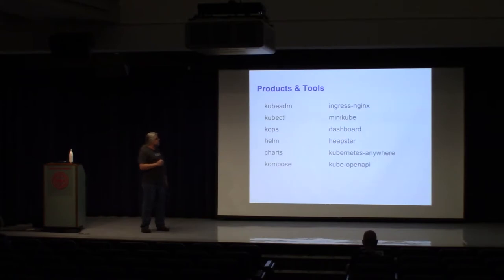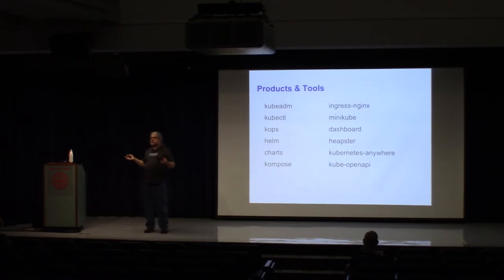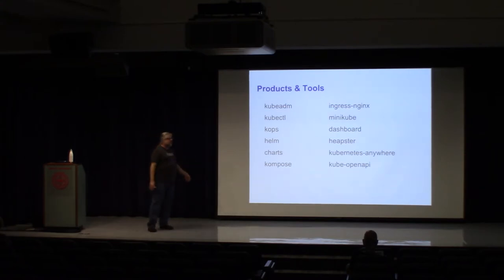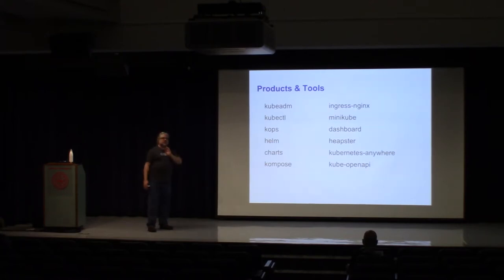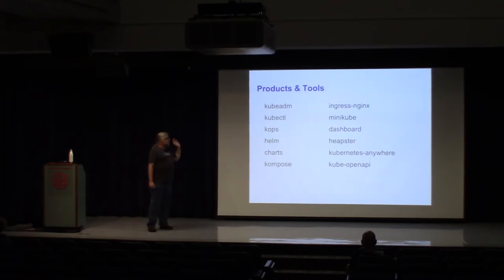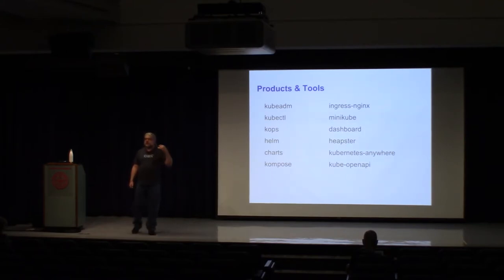Remember that if you're starting to contribute in code, you're actually more likely to start with a satellite project than with the core project. There are many repos for satellite projects — some in the kubernetes namespace, some not, and some in the kubernetes-sigs namespace where a lot of sub-projects live. If you want to improve Helm, Minikube, or the installation experience, you're going to be going to one of these satellite repos.